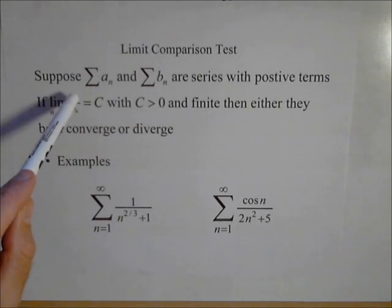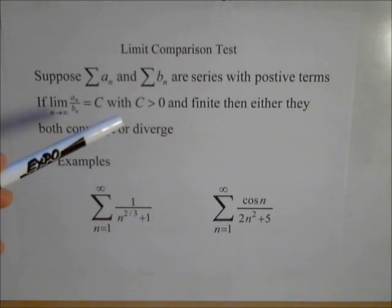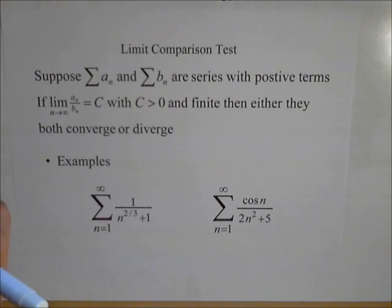And it doesn't matter which one you put on top. The reason it doesn't is because it can't be zero and it can't be infinity. It has to go to a constant. It doesn't matter which one you put on top, you're gonna get a constant either way.